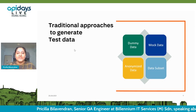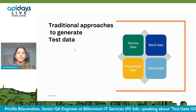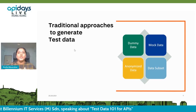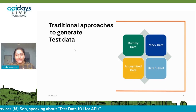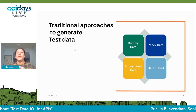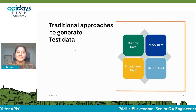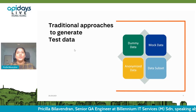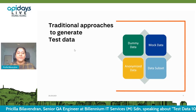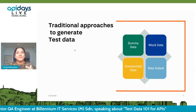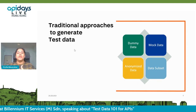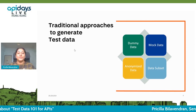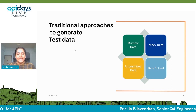The third category is anonymized data — wherein it is going to be de-identified data. You have a primary record in your table and you're masking that data so that it will not reveal the identity of the user. In that way, you're mocking the data so it becomes anonymized — you are not able to identify that record as a primary record. For example, we'll swap the names or mask important fields like your credit card number or account number.